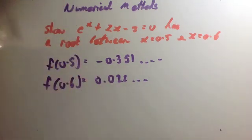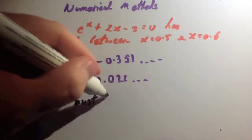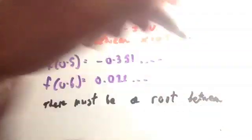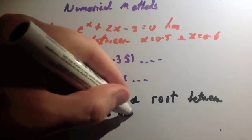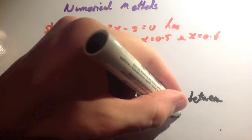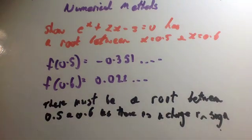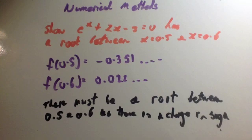To finish off the question, you need to state that. So you say there must be a root between 0.5 and 0.6 as there is a change in sign. Now you need to state that, okay? You can't just show this part. You need to state it. It's a bit like putting QED on the end of a proof question.